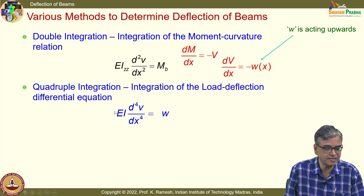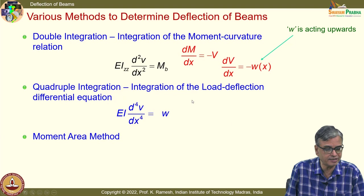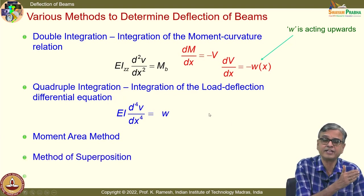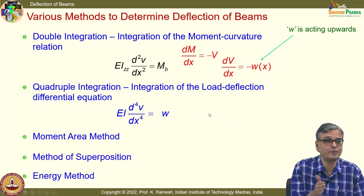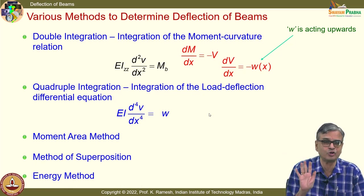When you do double integration or quadruple integration, you get the variation of slope and deflection along the length of the beam conveniently. This is useful even for statically indeterminate problems.